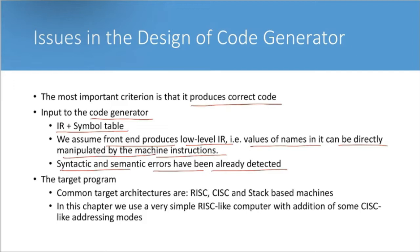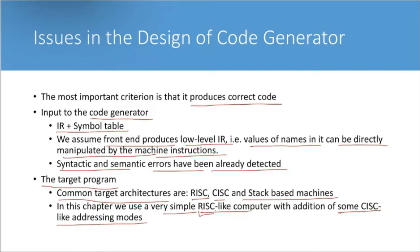The target program: common target architectures are CISC, RISC, and stack-based machines. In this chapter, we use a very simple RISC-like computer with addition of some CISC-like addressing modes. You have studied about CISC and RISC machines — what they are, what their architectures and addressing modes are — when you studied computer architecture.